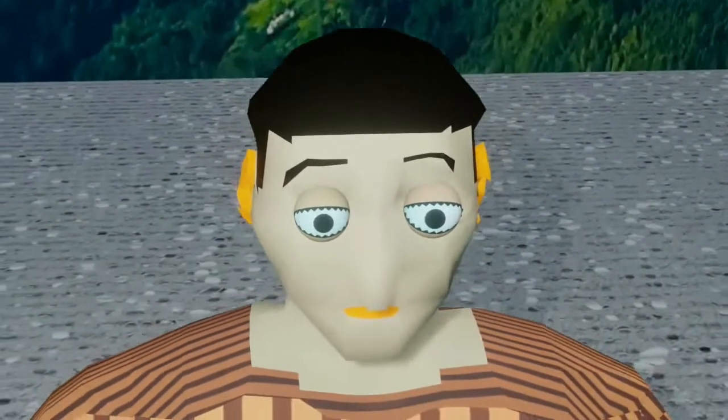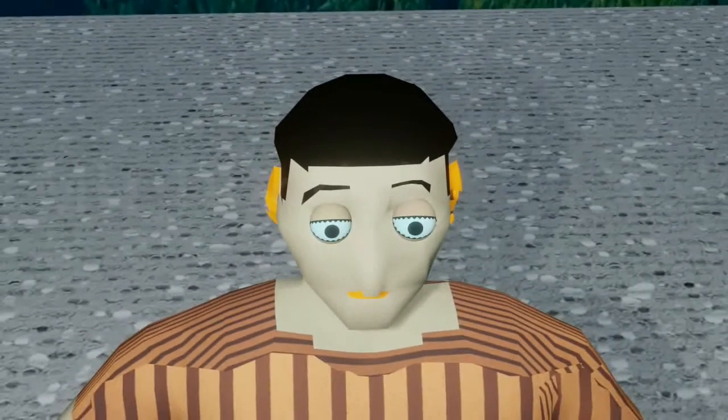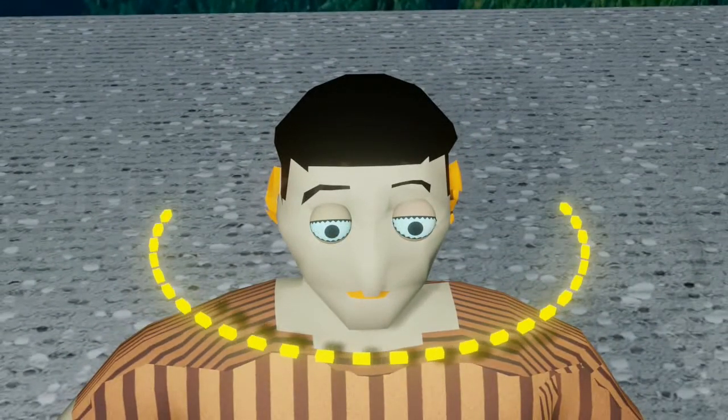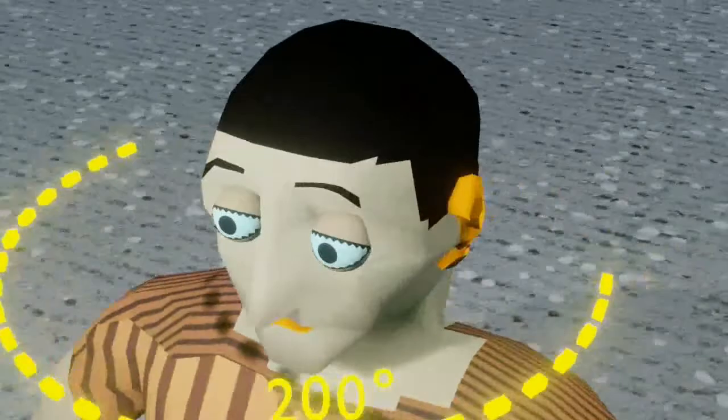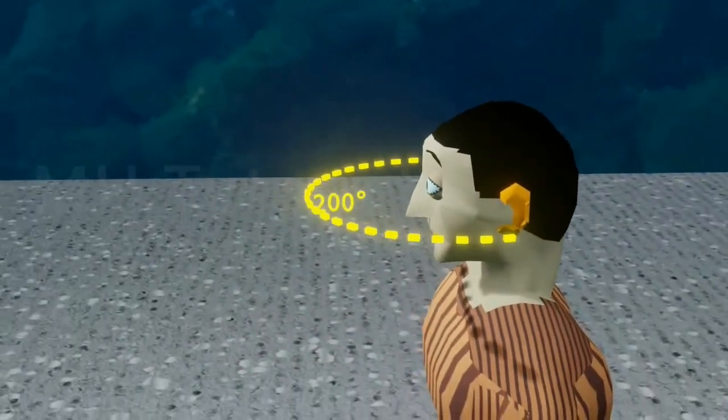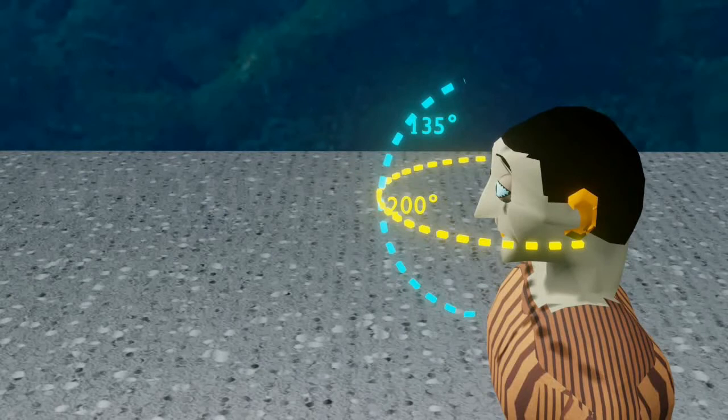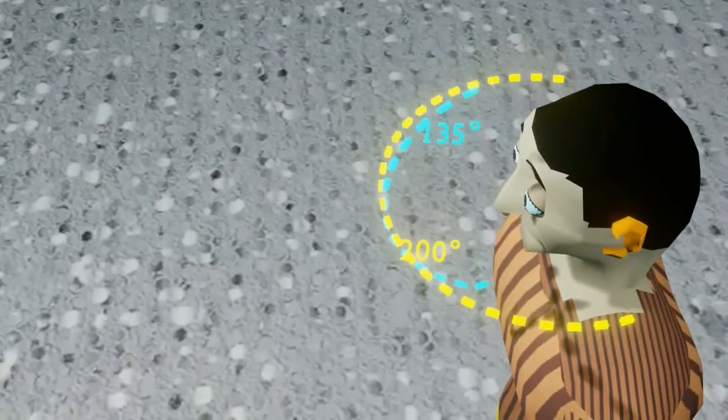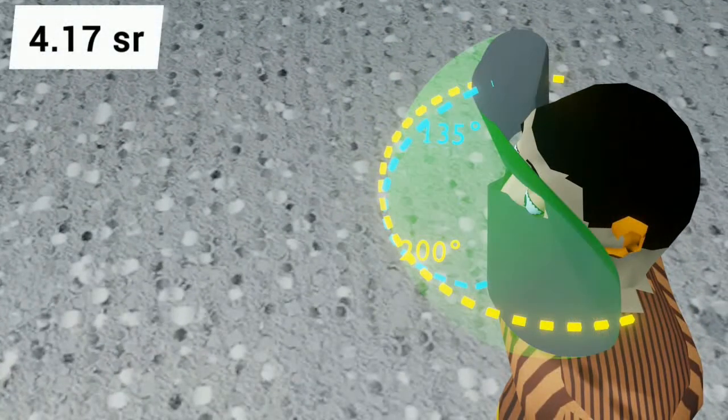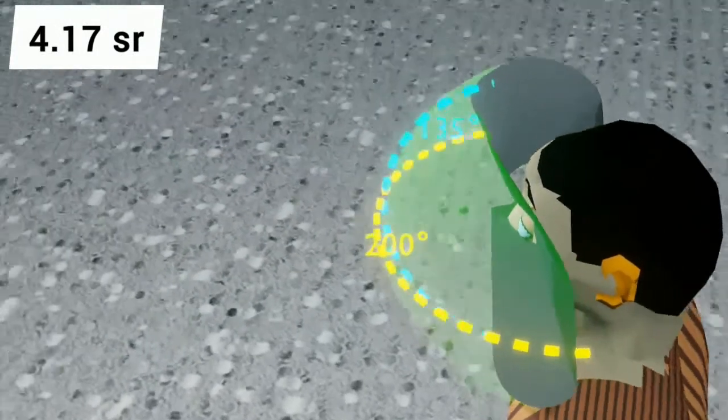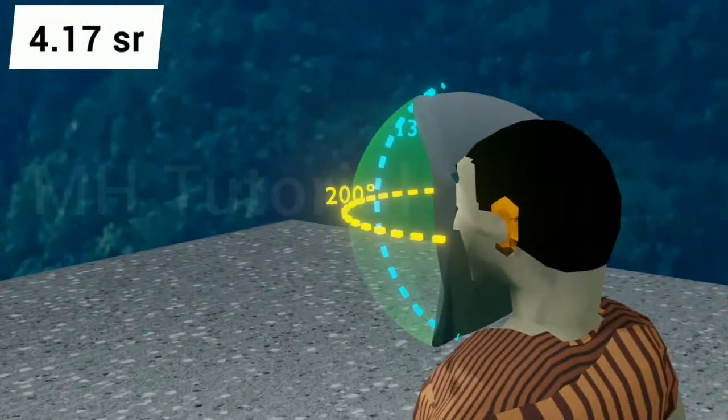Both two human eyes collectively can see a view of 200 degree along the horizontal plane and 135 degree along the vertical plane. Therefore, total viewing portion is about 4.17 steradians, or 13,700 square degree.